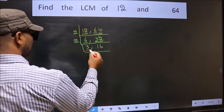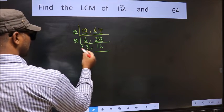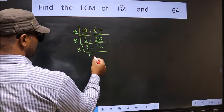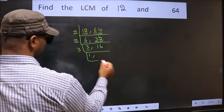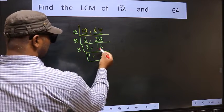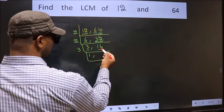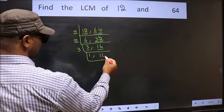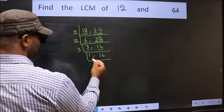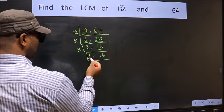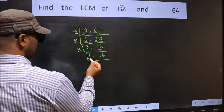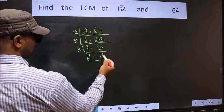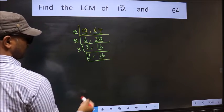Now here we have 3. Since 3 is a prime number, 3 times 1 is 3. The other number 16 is not divisible by 3, so we write it down as it is. We got 1 here, so focus on the other number 16.